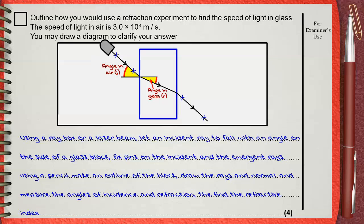Using a pencil, make an outline of the block. Draw the rays, a normal, and measure the angles of incidence and refraction.